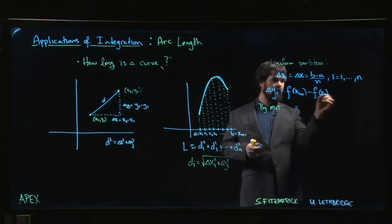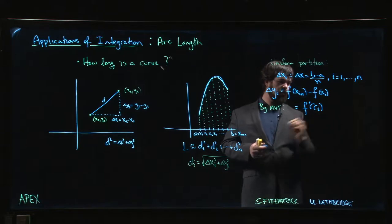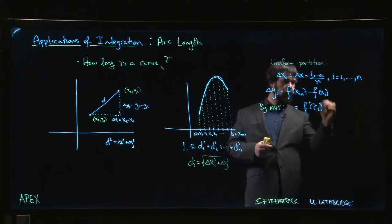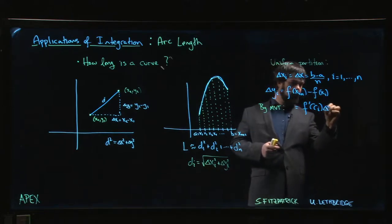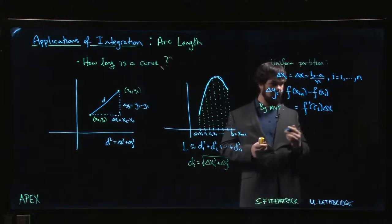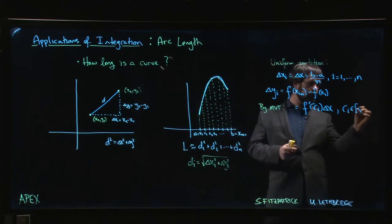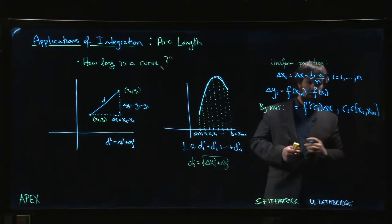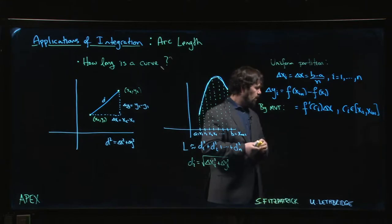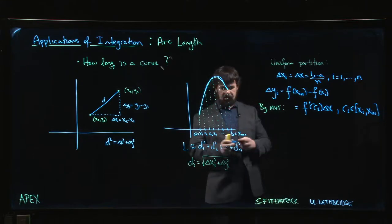If we assume differentiability, the Mean Value Theorem guarantees we can write the difference f(x_{i+1}) minus f(x_i) as f'(c_i) times delta x, where c_i is some number between x_i and x_{i+1}.